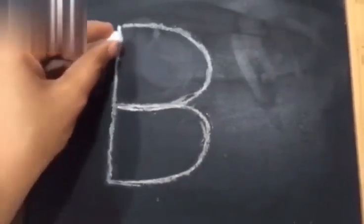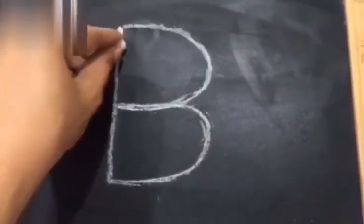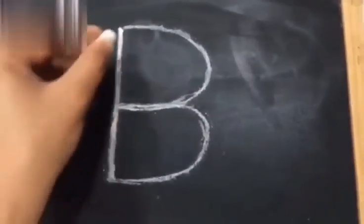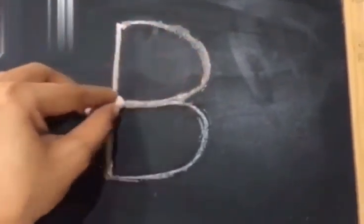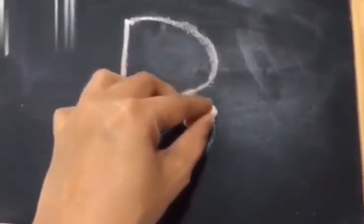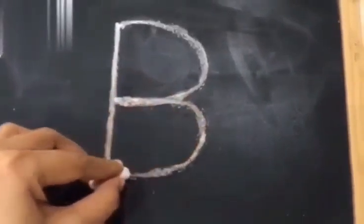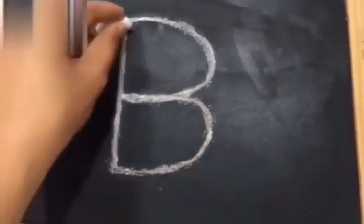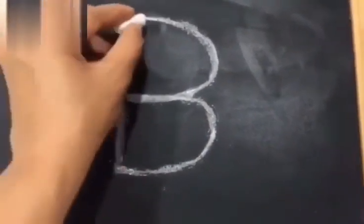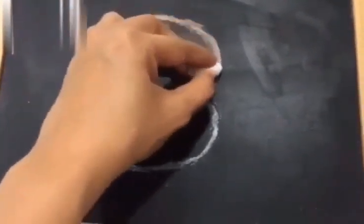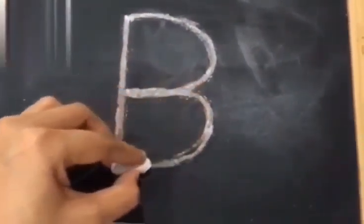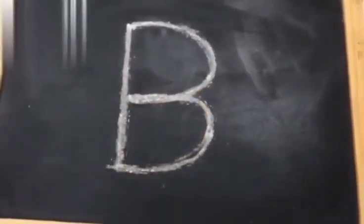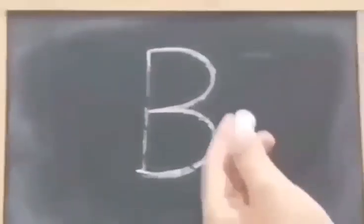Let's practice again. Standing line and two curves. Let's practice again. Standing line and two curves. B for ball. B for bus.